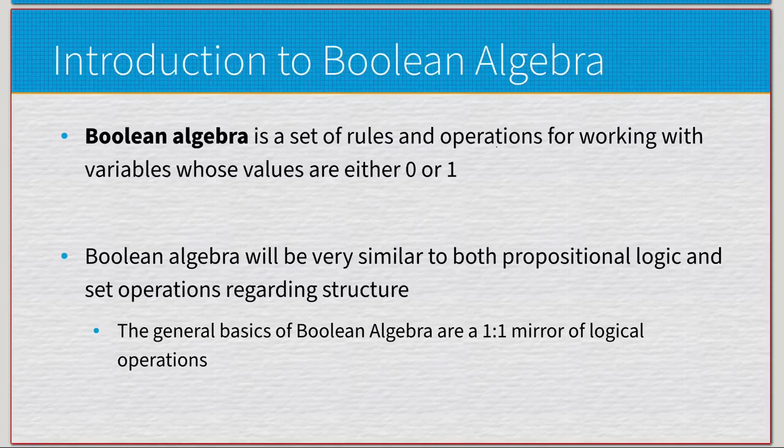Boolean algebra is a set of rules and operations for working with variables whose values are either zero or one, which is very similar to our false and true from propositional logic. So it's actually a one-to-one mirror to propositional logic. The set operations previously were in the vein of propositional logic, but you had to actually genuinely think about attributes being similar. With Boolean Algebra, it is far more similar.